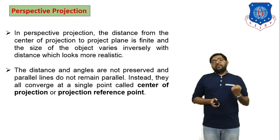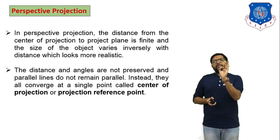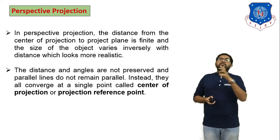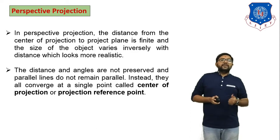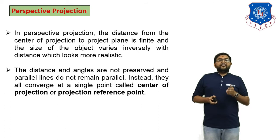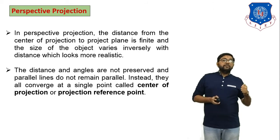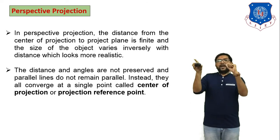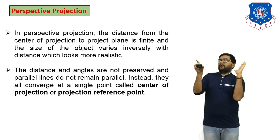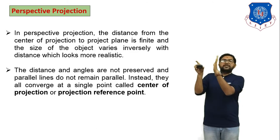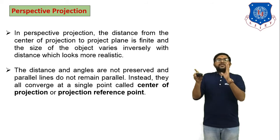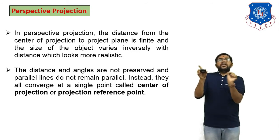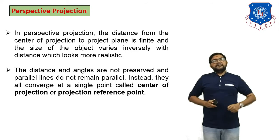What is perspective projection? If you find a projection from any particular point, that type of projection is perspective projection. In perspective projection the size of the object is either increased or reduced. The distance from the center of projection to the projected plane is finite, and the size of the object varies inversely with distance, which looks more realistic. If you change the position of the projection point, the size of the object varies with distance.